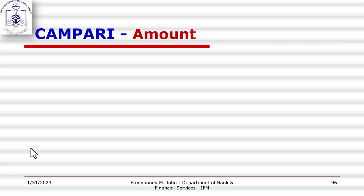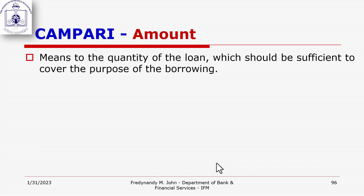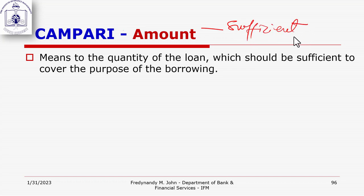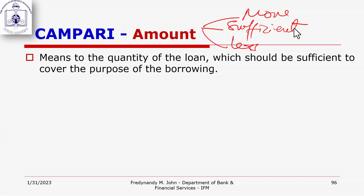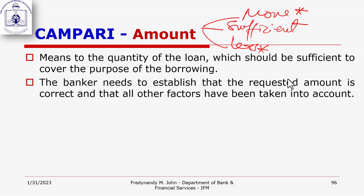Amount simply means the quantity of funds. We want the amount to be sufficient — no more, no less — to cover the entire project. If the amount is more or less than needed, you enter problems. The amount must be sufficient to cover the purpose of the loan, and it is the banker's duty to establish that the requested amount is indeed sufficient.